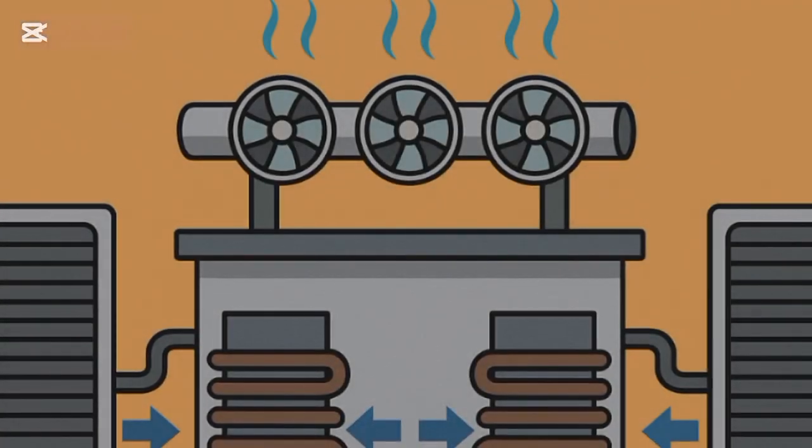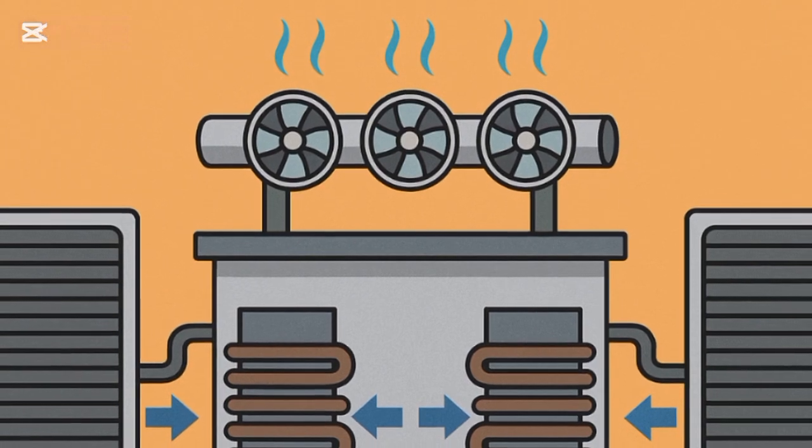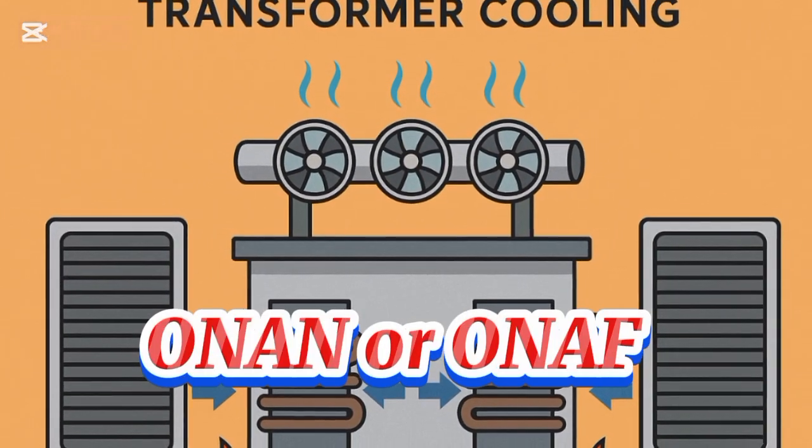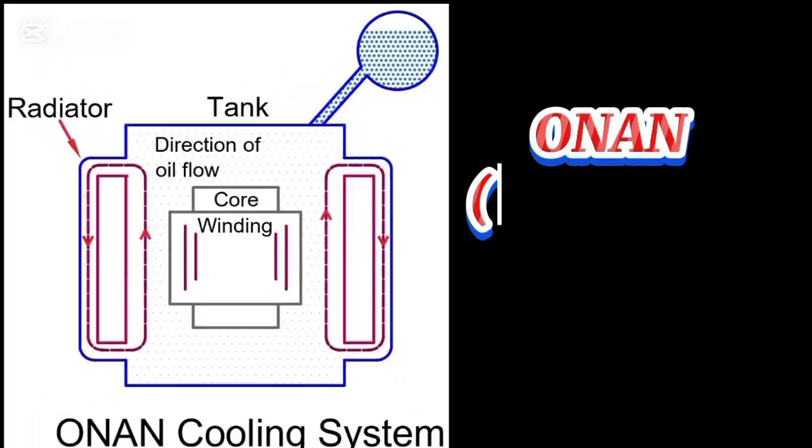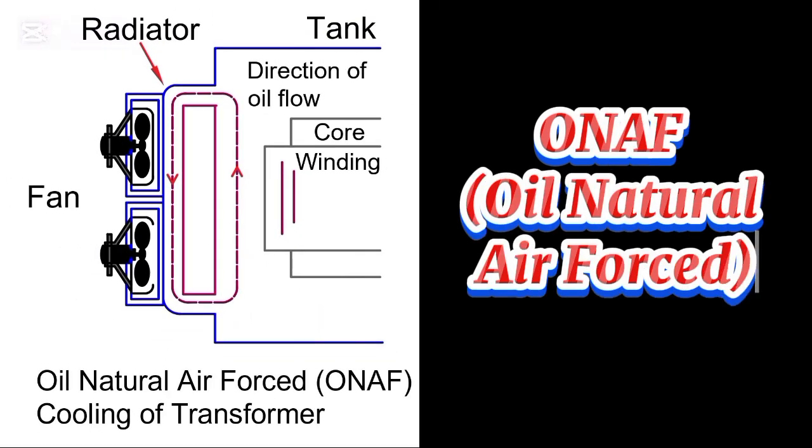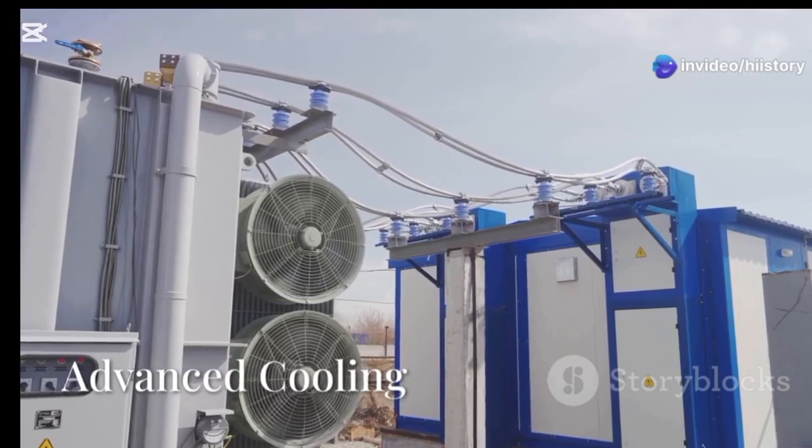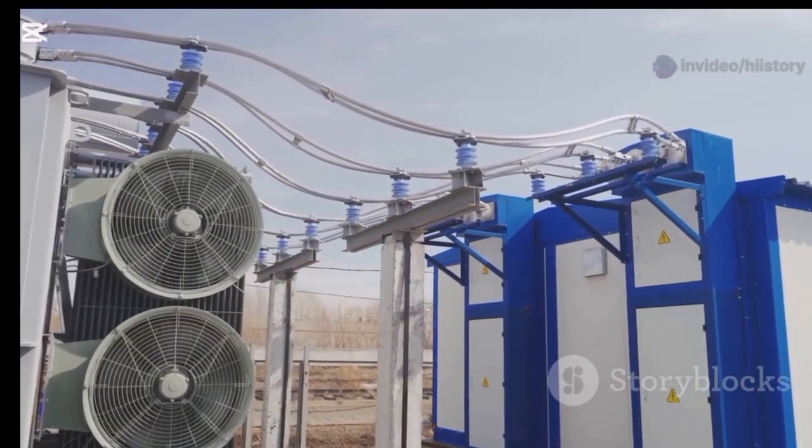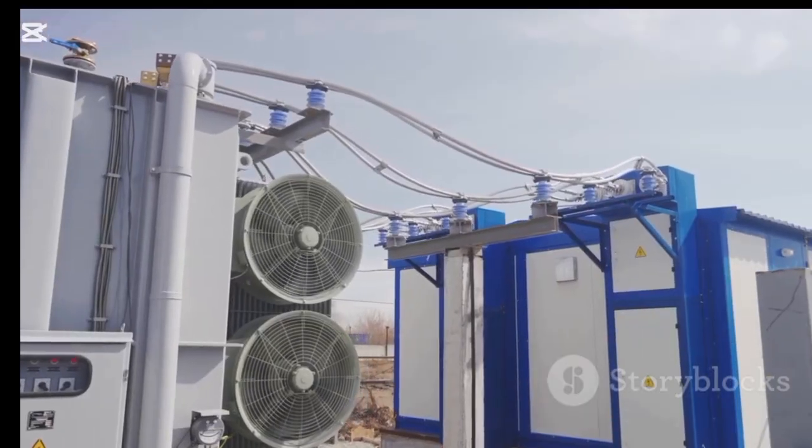Now, to manage all that heat, transformers employ air or oil cooling. You'll often see labels like ONAN or ONAF, which describe the cooling methods they use. ONAN means the transformer cools itself naturally using oil and air. ONAF adds fans to blow air and speed up cooling. Larger transformers may even use water to keep temperatures down.